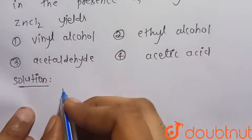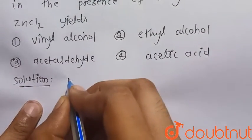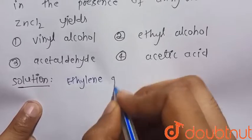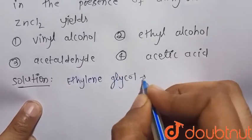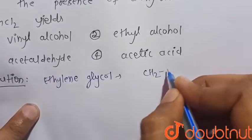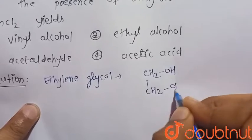So we know that ethylene glycol, chemical formula of ethylene glycol is CH2OH-CH2OH.